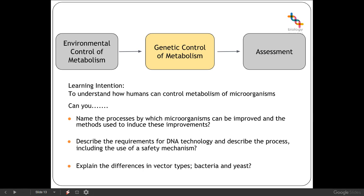From that, you should be able to understand how we can use genetics to control the metabolism of microorganisms. The processes by which microorganisms can be improved are mutagenesis or recombinant DNA technology. The methods used to induce mutagenesis could be a chemical mutagen or radiation. Within DNA technology, we require a plasmid as a vector — either bacteria or yeast — a regulatory sequence on the plasmid, a selectable marker, and a safety mechanism.